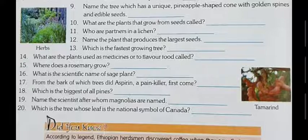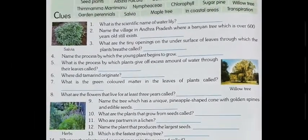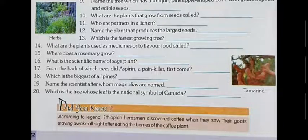Question number seventeen: from the bark of which tree did aspirin, a painkiller, first come? You can see the picture of a willow tree here. The answer is willow — W-I-L-L-O-W. Aspirin, the painkiller, was extracted from the bark of the willow tree.